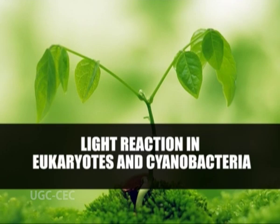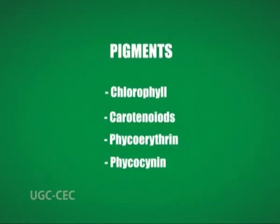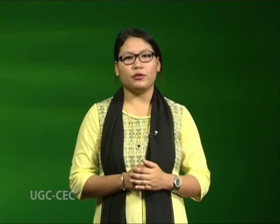In the light reaction in eukaryotes and cyanobacteria, all photosynthetic organisms have pigments for the absorption of light. Pigments include chlorophyll, carotenoids, phycoerythrin, and phycocyanin. Chlorophyll is the most important. Chlorophylls are large planar rings composed of four substituted pyrrole rings with a magnesium atom coordinated to the central nitrogen atom. Several chlorophylls are found in eukaryotes, but the most important are chlorophyll A and chlorophyll B.